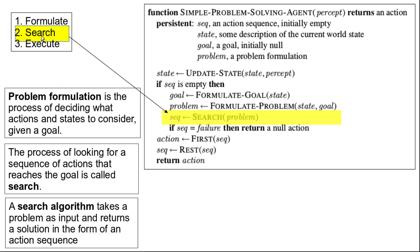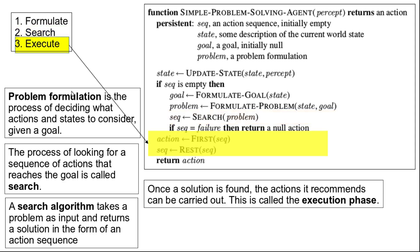Once the search algorithm returns a sequence of actions, we need to execute those actions. That constitutes the execute step. These two lines in the pseudocode constitute the execute step: once a solution is found, the recommended actions need to be carried out during the execution phase.